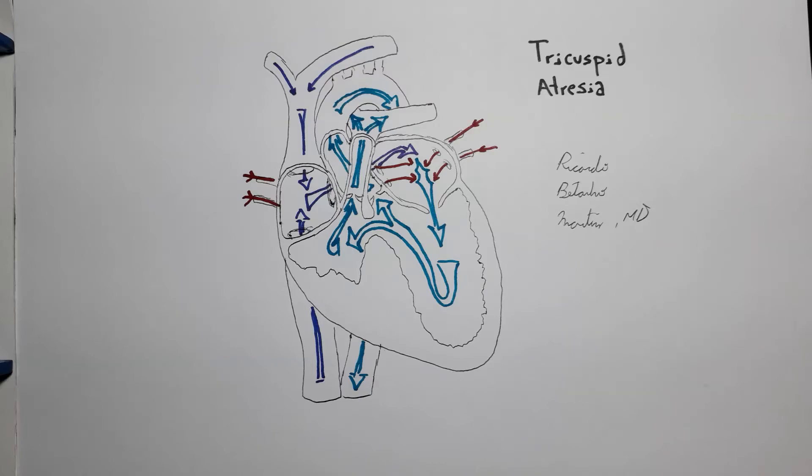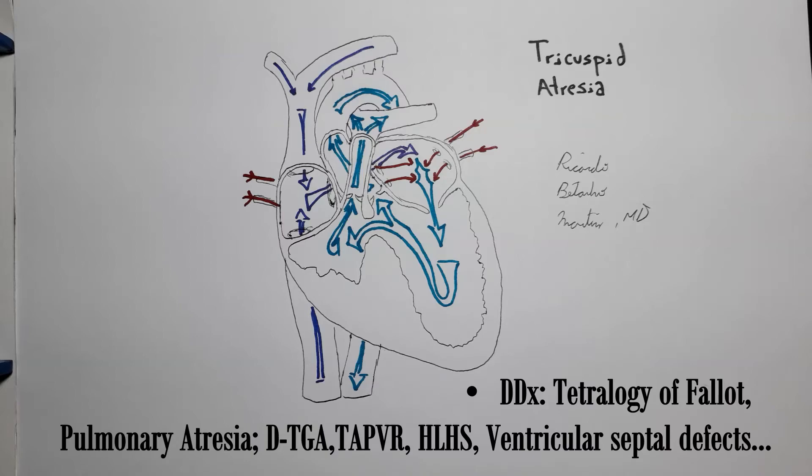The differential diagnosis for tricuspid atresia includes especially other cyanotic congenital heart diseases with decreased pulmonary blood flow, such as tetralogy of Fallot or pulmonary atresia. However, in the presence of increased pulmonary blood flow, it's transposition of the great arteries, total anomalous pulmonary venous return, hypoplastic left heart syndrome, and ventricular septal defects that should be considered.